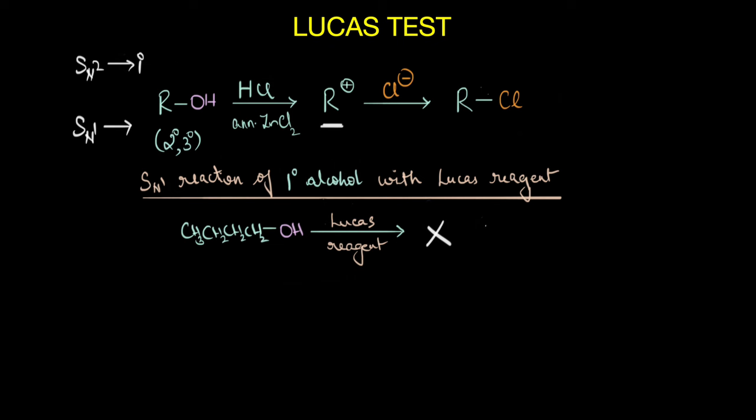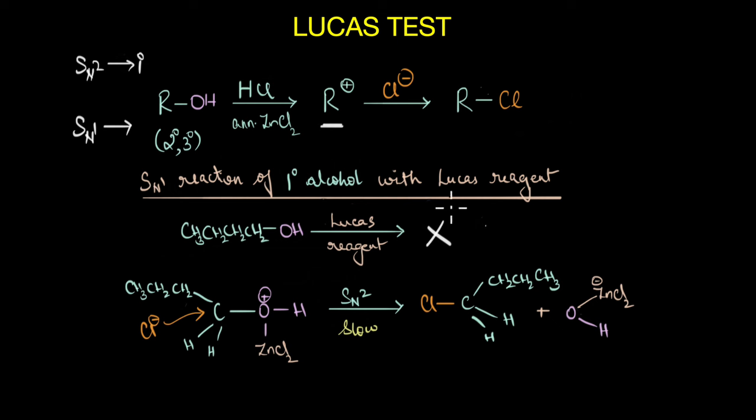But SN2 reaction of primary alcohol with Lucas reagent does proceed. As you can see here the lone pair of electrons on the oxygen atom coordinate strongly with zinc chloride. Now in the usual case when we treat an alcohol with an acid the OH group gets protonated. But the advantage of using ZnCl2 here is that zinc chloride coordinates much more strongly with the oxygen atom as compared to proton and as a result this becomes a much better leaving group.